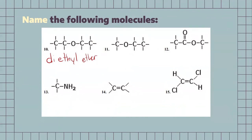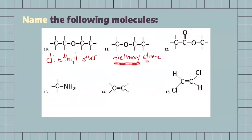For our next one, we're also going to have another ether, but the naming for this is going to be a little bit different since one chain is bigger than the other one. Starting off with the smallest chain first, this is going to be a methane, and our other one is going to be an ethane. So, we can combine this to be called methoxyethane — methoxy for this chain, and the ethane for the chain on the other side.